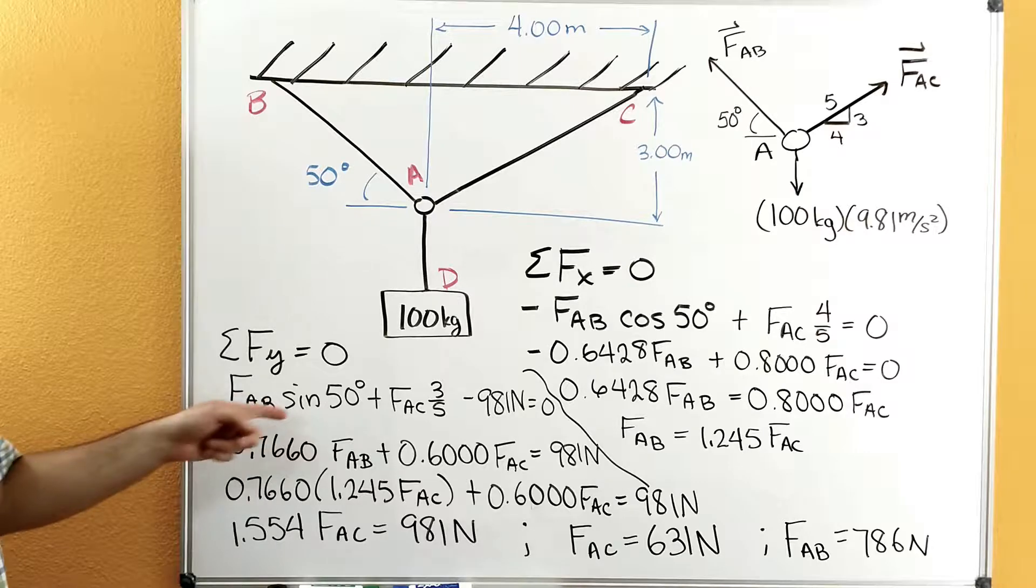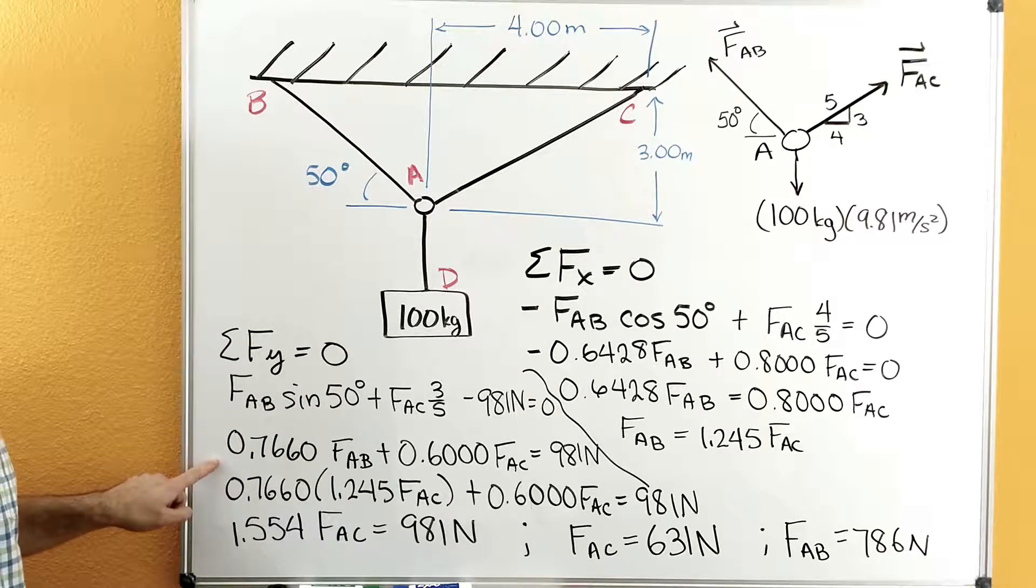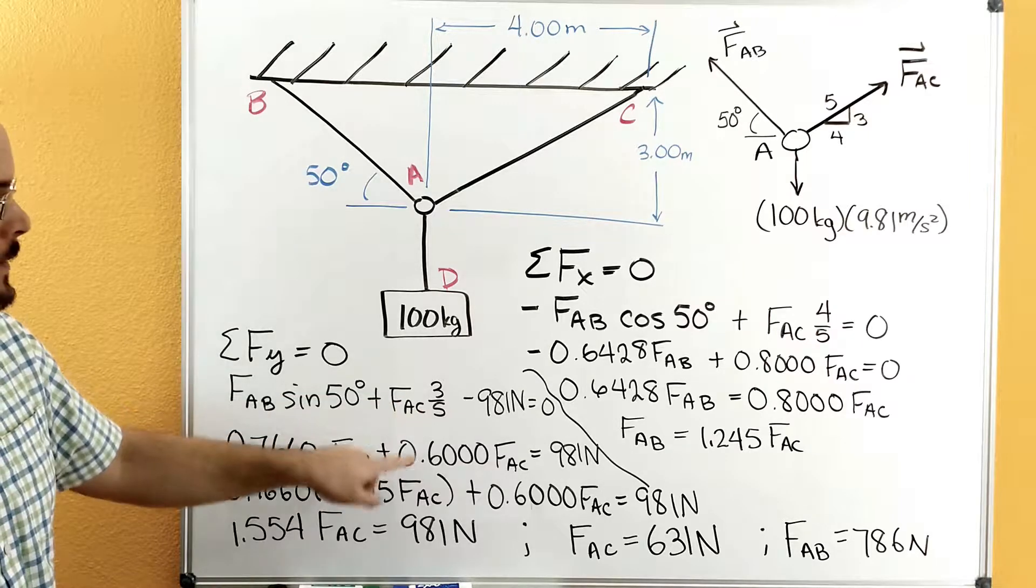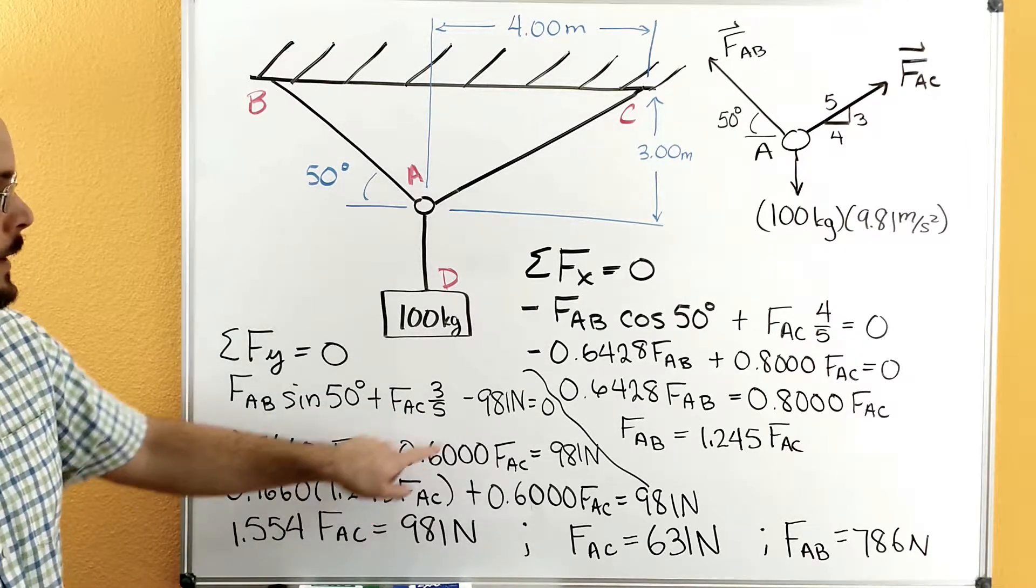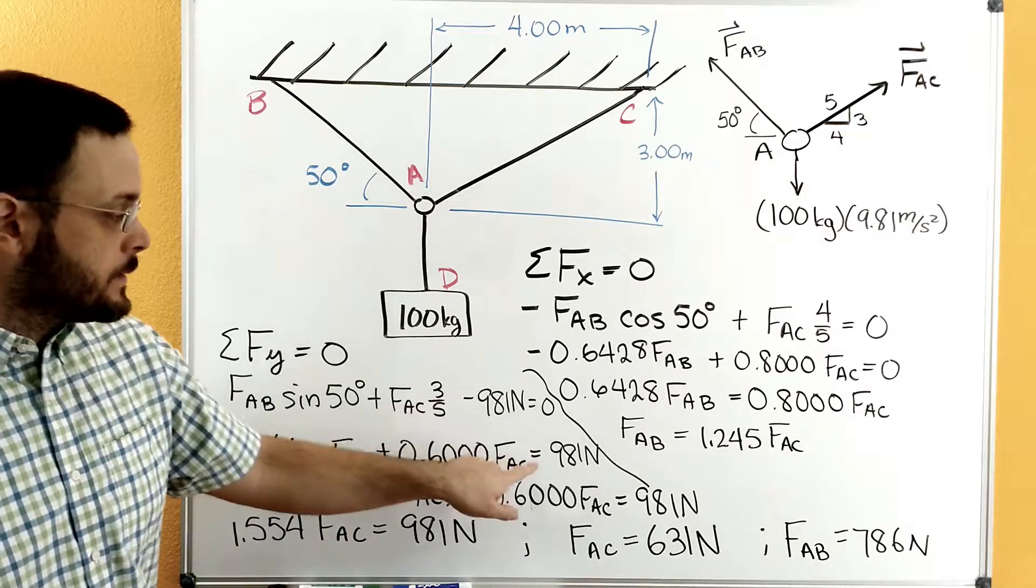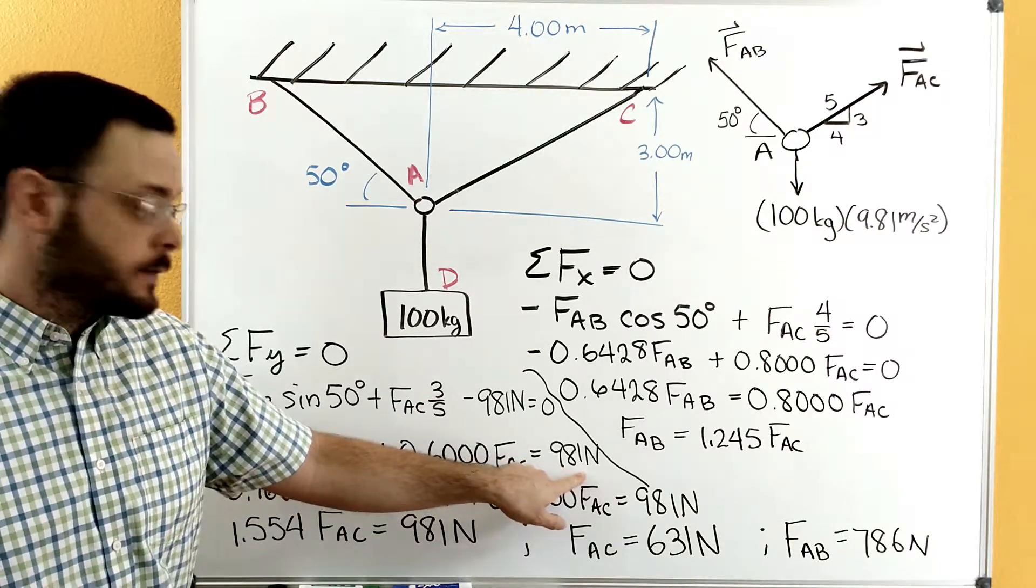So just like before, we'll take the sine and just go ahead and put in your calculator, convert it out, get a decimal. Do the three-fifths, convert that over to a decimal. We've got the negative 981 here, so we're going to add 981 to both sides. So it'll send the 981 over to this side of the equation.